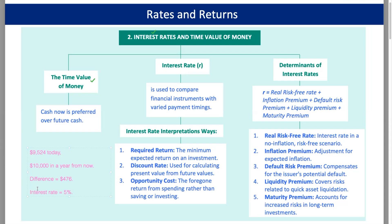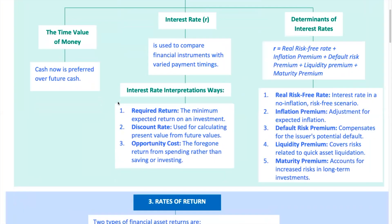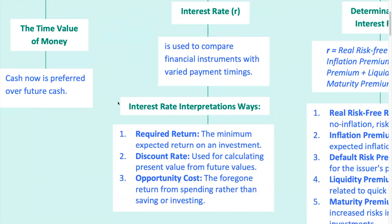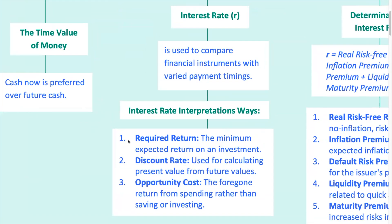The difference of $476 is the payoff for waiting a year, which translates to an interest rate of 5%. Interest rates can be broken down in three main ways. Number one is the required rate of return — the minimum return that an investor expects to earn from an investment. Think of it as the hurdle you need to clear to make the investment worthwhile. Number two is the discount rate, which is used to bring future cash flows back to their present value — like asking what that $10,000 next year is worth in today's dollars.